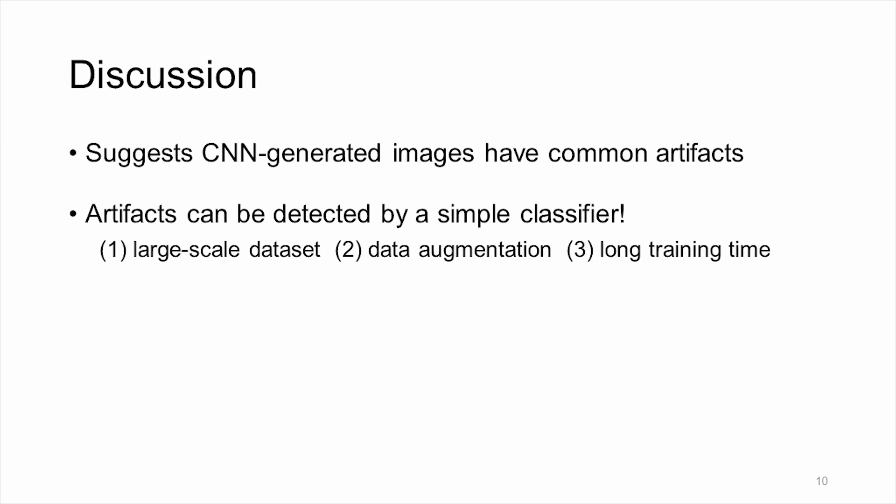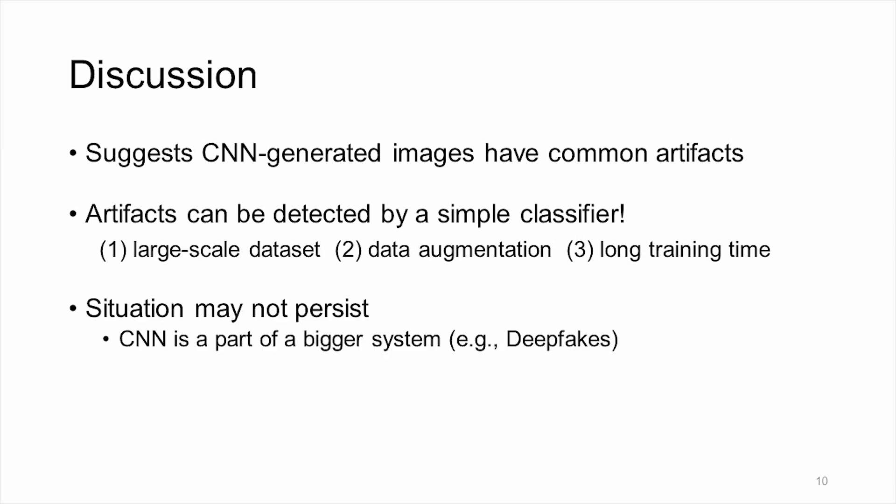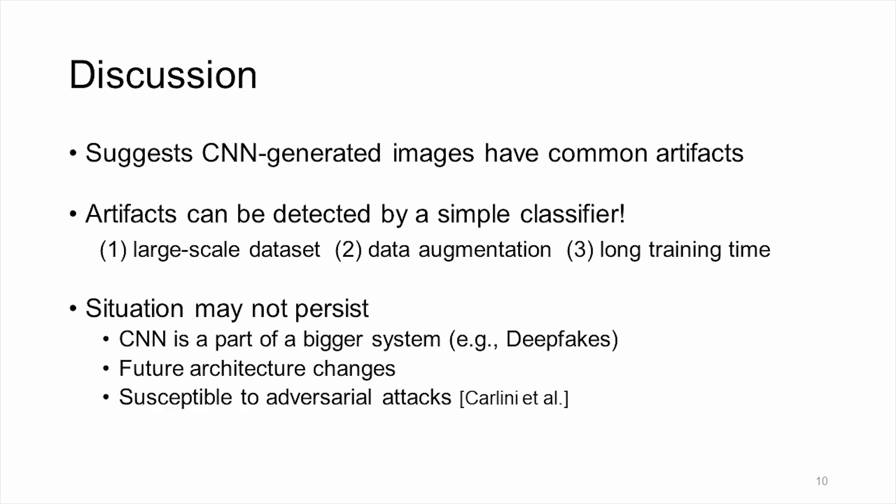However, this does not mean that the problem is solved. From the results we have on deepfakes, we know it remains challenging to detect manipulations where CNN is only one part of a bigger system. And future architectural changes and generative models might buck this trend, as will adversarial attacks.